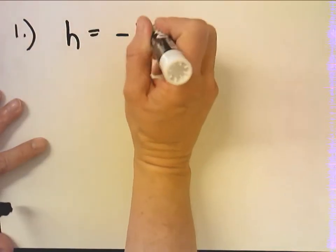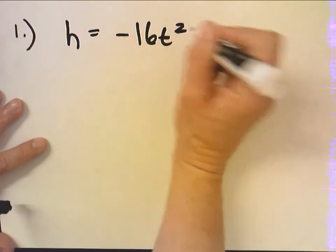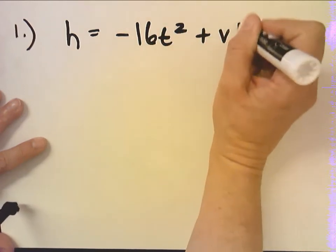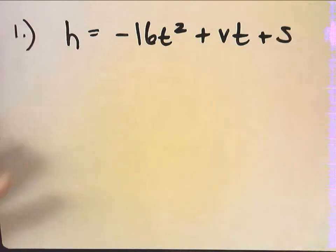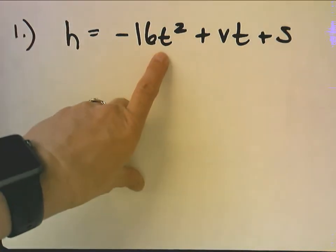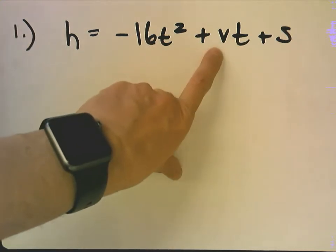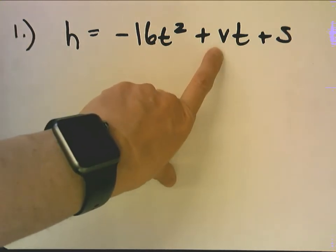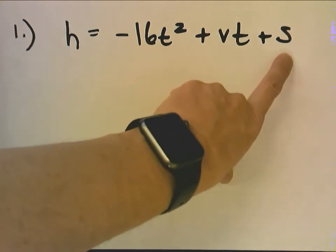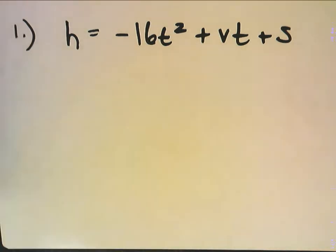So this is the vertical velocity equation. Now t stands for time in seconds that an object has been in the air, v stands for the initial vertical velocity in feet per second, and s is the initial height in feet.